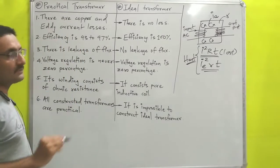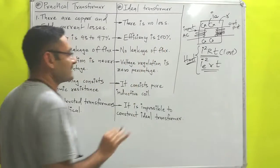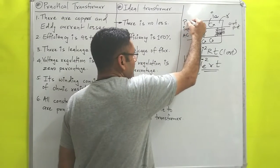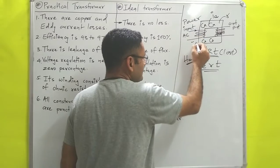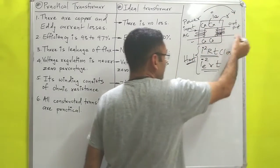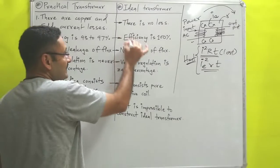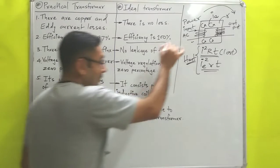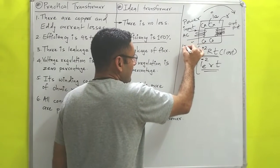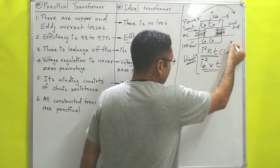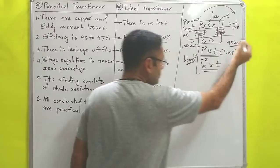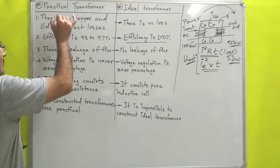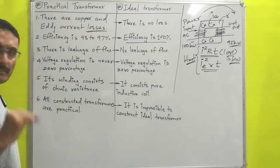Next, efficiency is 93% to 97% for a practical transformer, whereas efficiency is 100% for an ideal transformer. In the case of an ideal transformer, whatever power you supply to the primary side, the same power you get on the secondary side. In a practical transformer, if you supply 100 kilowatts, only about 95 kilowatts are transmitted because 5 kilowatts are wasted as losses.